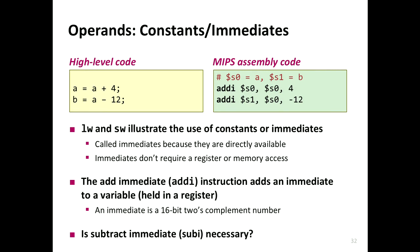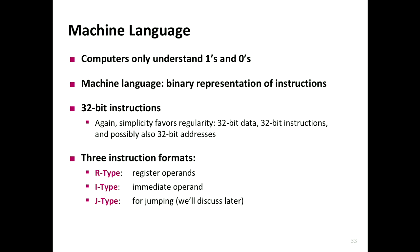So far we've seen some basics of assembly language: add, subtract, add immediate. We've learned how to read and write data from memory. But these are still in human-readable format. For a computer to understand — since it only understands zeros and ones — you need to convert assembly instructions into machine language. In MIPS, there are three different instruction formats: R-type, I-type, and J-type.